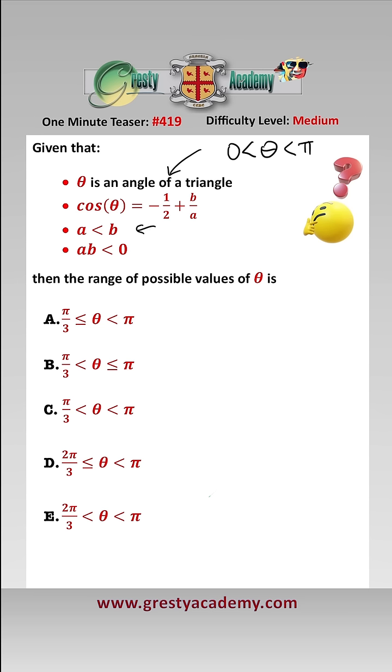As a is less than b and ab is less than 0, then we know that a must be less than 0 and b must be greater than 0.